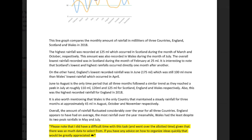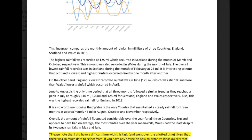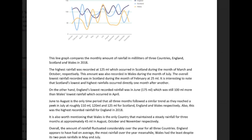Let's see what you actually wrote. This line graph compares the monthly amount of rainfall in millimeters of three countries — England, Scotland, and Wales — in 2018. The highest rainfall was recorded at 125 ml, which occurred in Scotland during the month of March and October respectively. What about what happened here with Wales? It's pretty much the same figure, right? This amount was also recorded in Wales during the month of July.